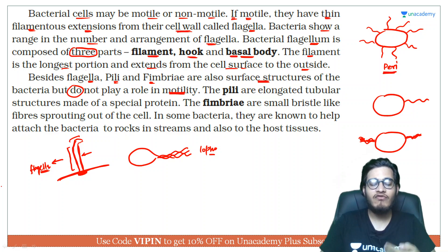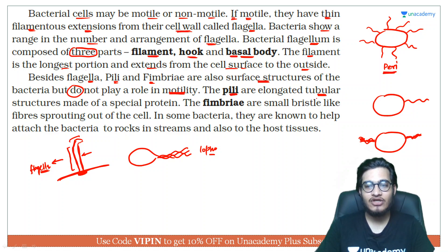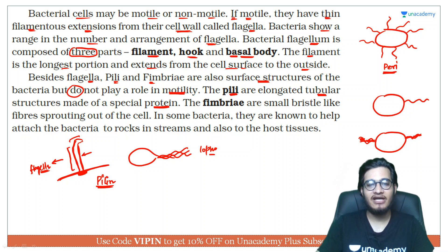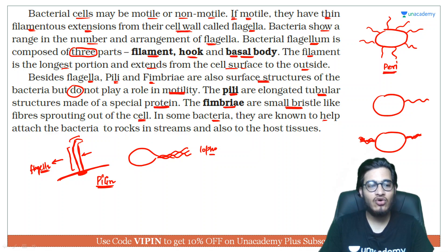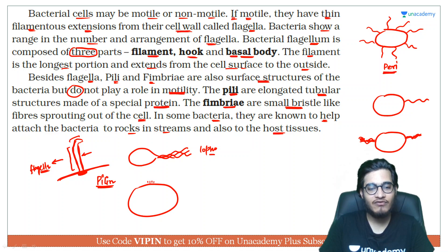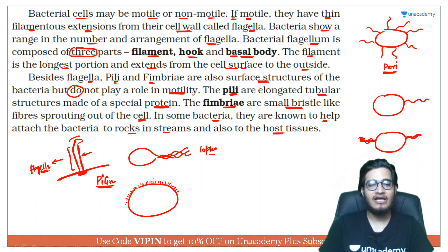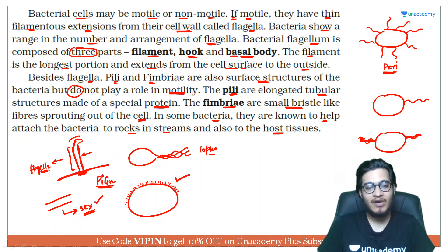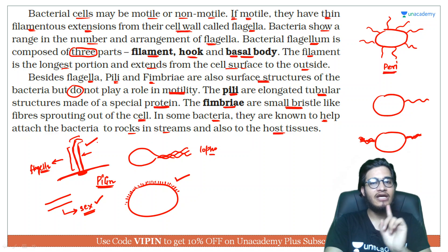Cilia cause movement of the medium, not the cell itself. Flagella are tubular, tube-like structures made of a special protein called pilin. Pili are thus made of pilin protein. Fimbriae are small bristle-like structures projecting from the cell surface. Some bacteria use fimbriae to attach to rocks in streams or to host tissue — they function as grips. Fimbriae provide additional attachment to any substratum. Pili, being tube-like structures, often form the sex pilus, which helps in the exchange of genetic material. So: flagella help in movement; pili help in genetic material exchange; fimbriae help in attachment — but pili and fimbriae do not help in motility.